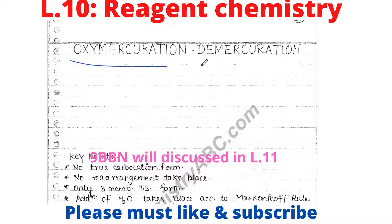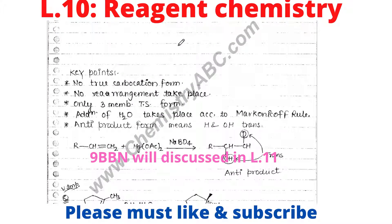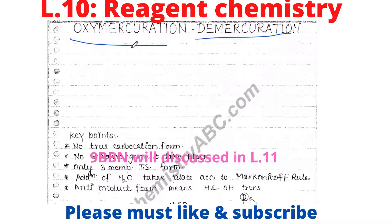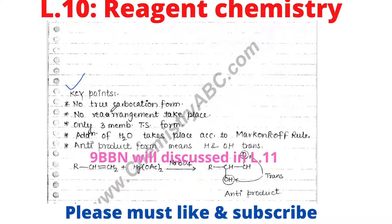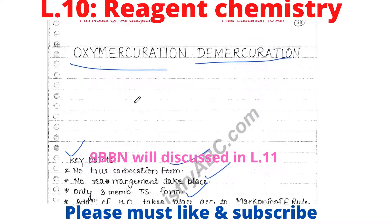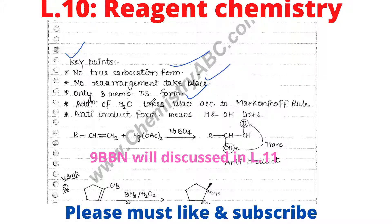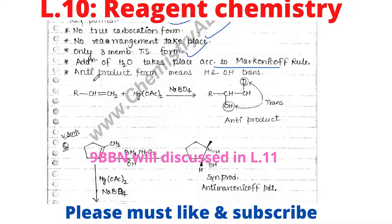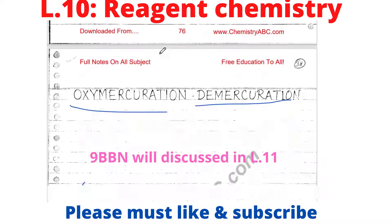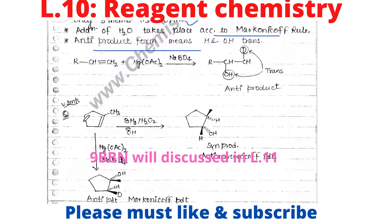For oxymercuration-demercuration, key points are: no true carbocation is formed, similar to hydroboration; no rearrangement takes place; only a three-membered transition state is formed — this is the difference, since hydroboration has a four-membered transition state. Addition of water follows Markovnikov's rule and an anti-product is formed, meaning H and OH will be trans, whereas in hydroboration the addition is cis (syn).